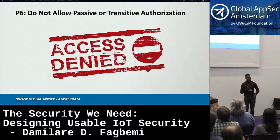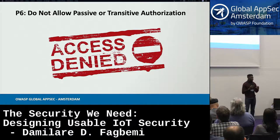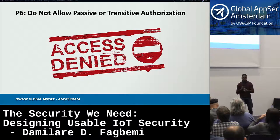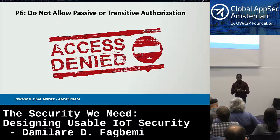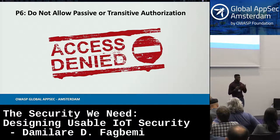The sixth principle deals with not allowing transitive authorization. It's a general principle meaning that an IoT system administrator has to actively grant authority, and in such a system, anyone who needs authority must be able to request authority.